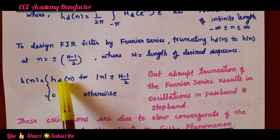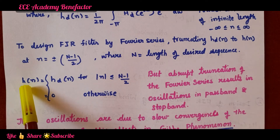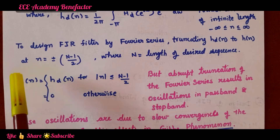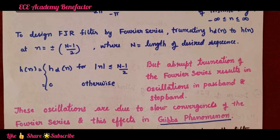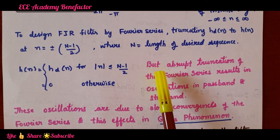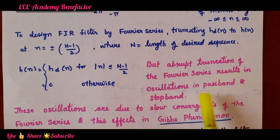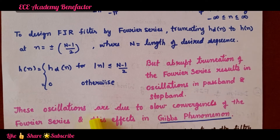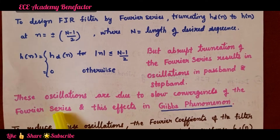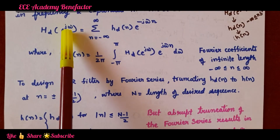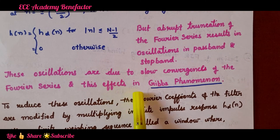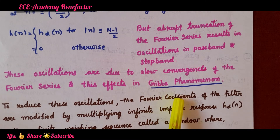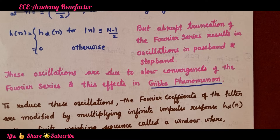We are truncating the infinite duration H_d(n) to finite duration H(n). When we truncate from infinite duration to finite duration, it results in oscillations in the pass band and stop band. Abrupt truncation of the Fourier series results in oscillations in pass band and stop band. These oscillations are due to slow convergence of the Fourier series. This effect is known as Gibbs phenomenon.